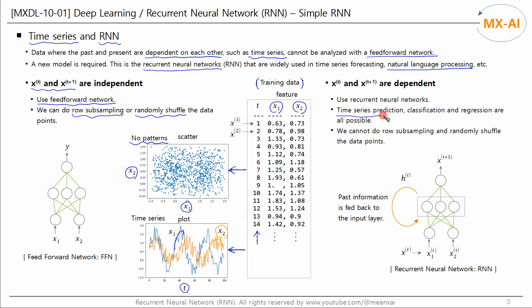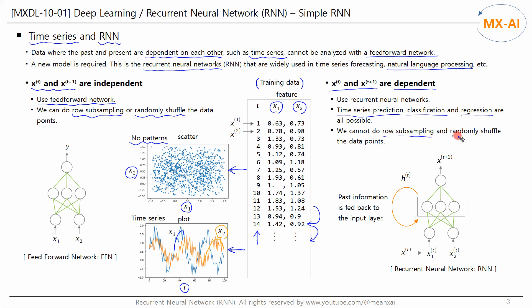Recurrent neural networks can be used not only for time series prediction, but also for classification and regression. In this data, xt and xt+1 are dependent — the current values of a time series can be explained based on previous values, and future values can be predicted based on present values. This is time series forecasting. Feedforward networks cannot learn from time series data because they assume that input data points are independent. Time series data cannot be sampled or shuffled because the dependency relationship would be broken.